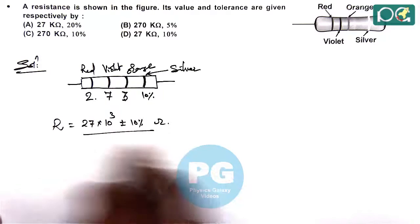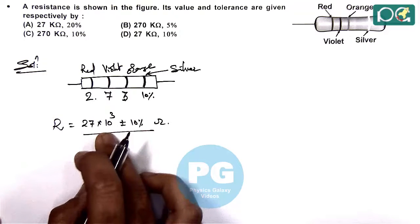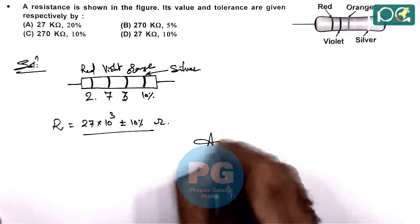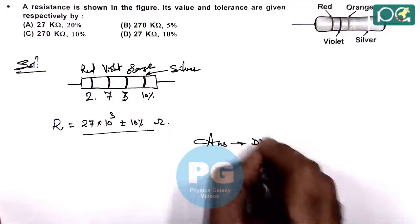That is the resistance, so we can see this is 27 kilo ohms. So here we can see 27 kilo ohms with the 10 percent tolerance. So your answer to this question we will choose as option D.